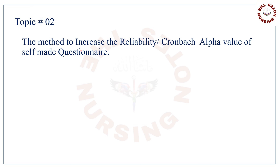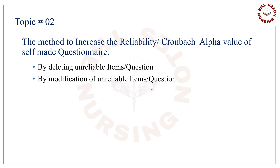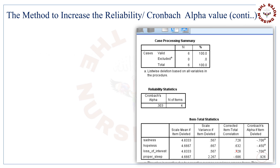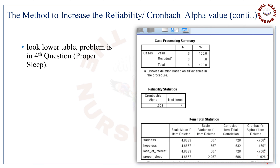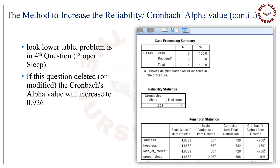Now the question arises: how to increase this value? The method to increase the reliability or Cronbach's alpha value of a self-made questionnaire involves two methods: by deleting or by modification of unreliable items. Look at the lower table — 'Cronbach's alpha if item deleted.' The item 'proper sleep' shows a higher Cronbach's alpha value on deletion. It means if we delete this question, Cronbach's alpha value increases to 0.926. Items showing a higher value on deletion are problematic; we need to modify or delete those items.